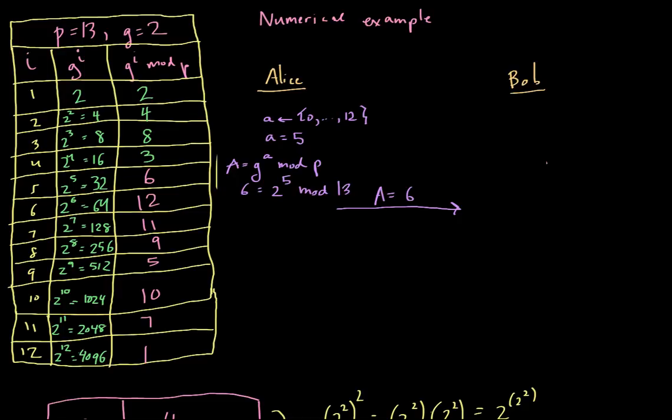And what is Bob going to do? Well, Bob, in turn, will compute his own value. So let's say Bob computes, and let's say he picks a lowercase b value. He's going to pick this from 0 to p minus 1. In this case, p minus 1 is 12. And let's say, for example, in this case, he picks b equal to 7.